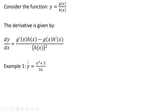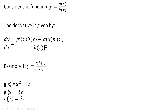Let's do an example. The g of x function is x squared plus 5, and the h of x function is 3x. We're going to take the derivative of the g of x function and we get 2x. Here's the h of x function in the denominator, and the derivative of that is just going to be 3.